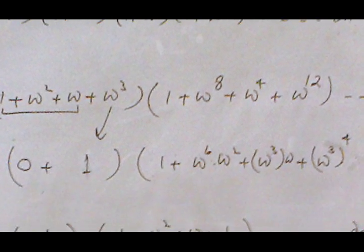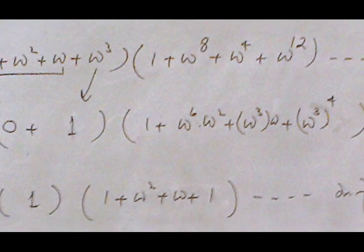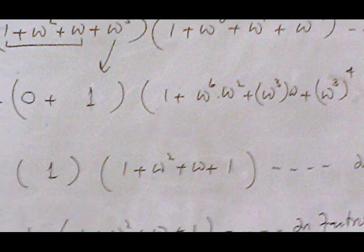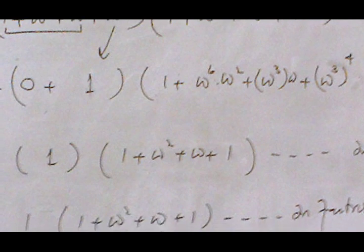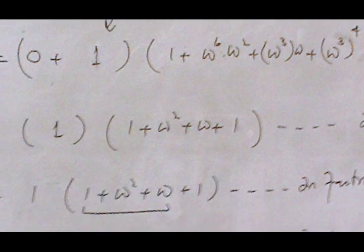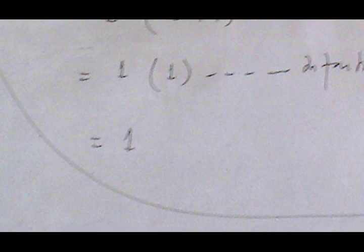In the product of the second pair we get ω⁸, reducing it: ω⁸ = ω⁶ · ω², and ω⁴ = ω³ · ω, and ω¹² = (ω³)⁴. Since ω⁶ = 1, ω³ = 1, and (ω³)⁴ = 1, this bracket also gives values where the first three equal 0 and the last equals 1. Therefore each pair equals 1.